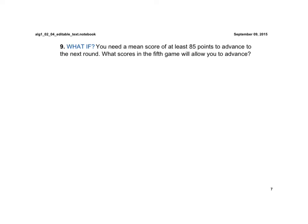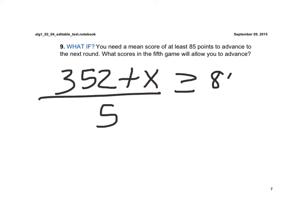So now, what if you need a mean score of 85 points? So again, we have the same equation, 352 plus x all divided by 5, but now, instead of being greater than or equal to 90, it's greater than or equal to 85.